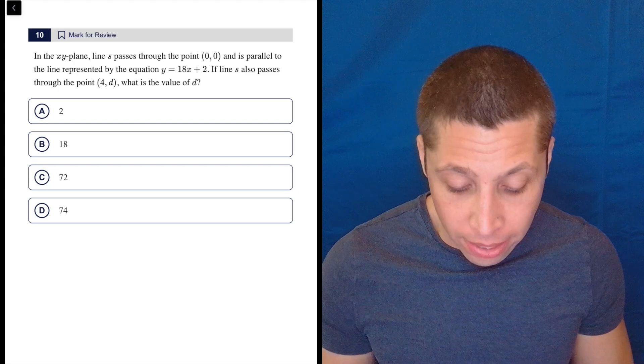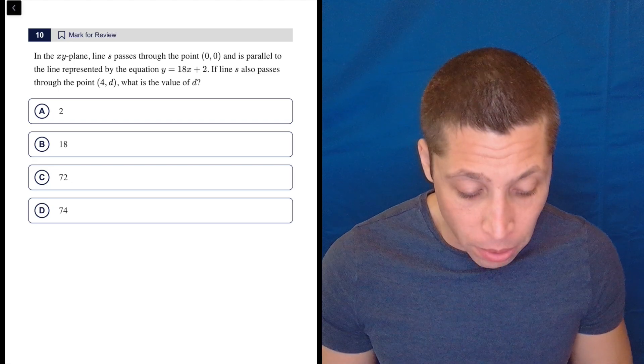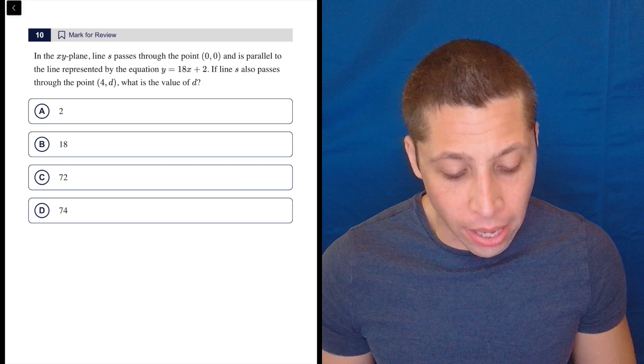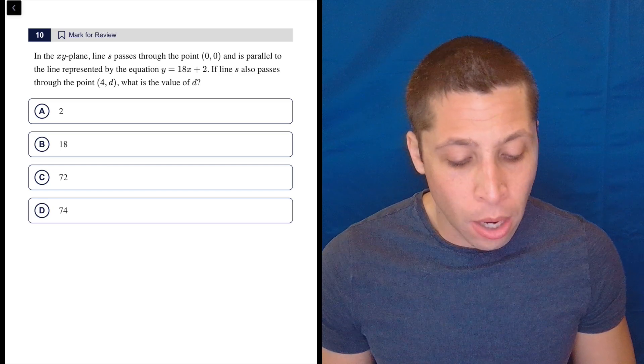We recognize what they're doing. They're talking about lines in the x-y plane. Line s passes through the point (0,0) and is parallel to the line represented by the equation y equals 18x plus 2. If line s also passes through the point (4,d), what is the value of d?